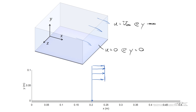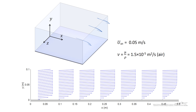Drawing the velocity profile, we see that it is uniform far away from the surface, and we have to figure out what it looks like as we get closer to the plate. This is for air going over the surface of the plate, where air has a kinematic viscosity of 1.5 times 10 to the minus fifth meters squared per second, and the air flows over the surface at a speed of 0.05 meters per second. So far away from the plate, the speed is 0.05 meters per second, and at the surface, u equals zero.